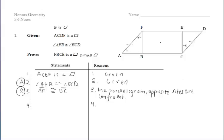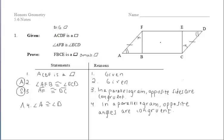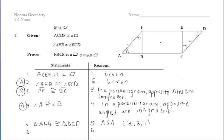We have angle and side. To use ASA, we would need angle A congruent to angle D, and we can say that because in a parallelogram opposite angles are congruent. So triangle AFB is congruent to triangle DCE by ASA, using the information from steps two, three, and four of our proof.